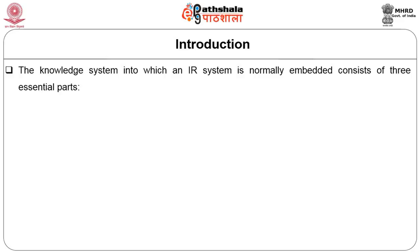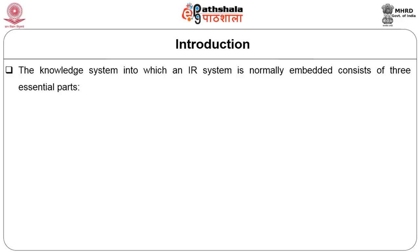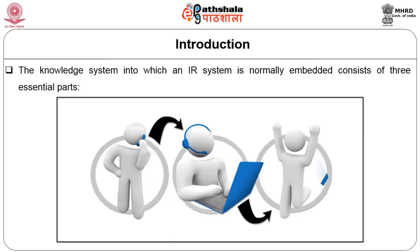The knowledge system into which an IR system is normally embedded consists of three essential parts: people in their role as information processors; documents in their role as carriers of information or information resources or collections; and third, and most important, topics as representations. These we can deem as the three basic and essential parts of an IR system.